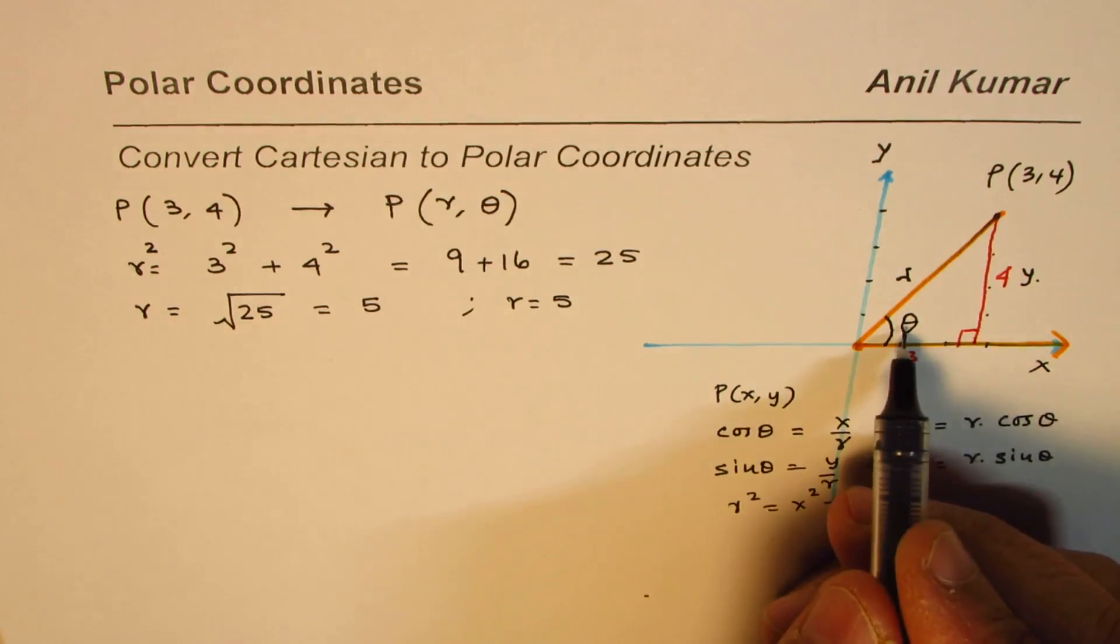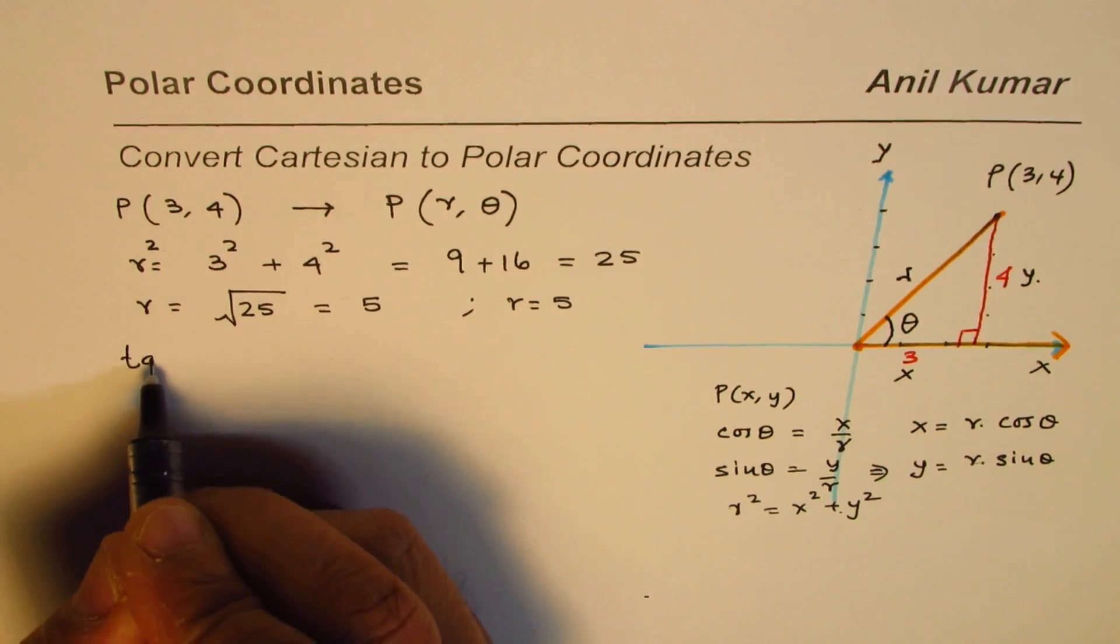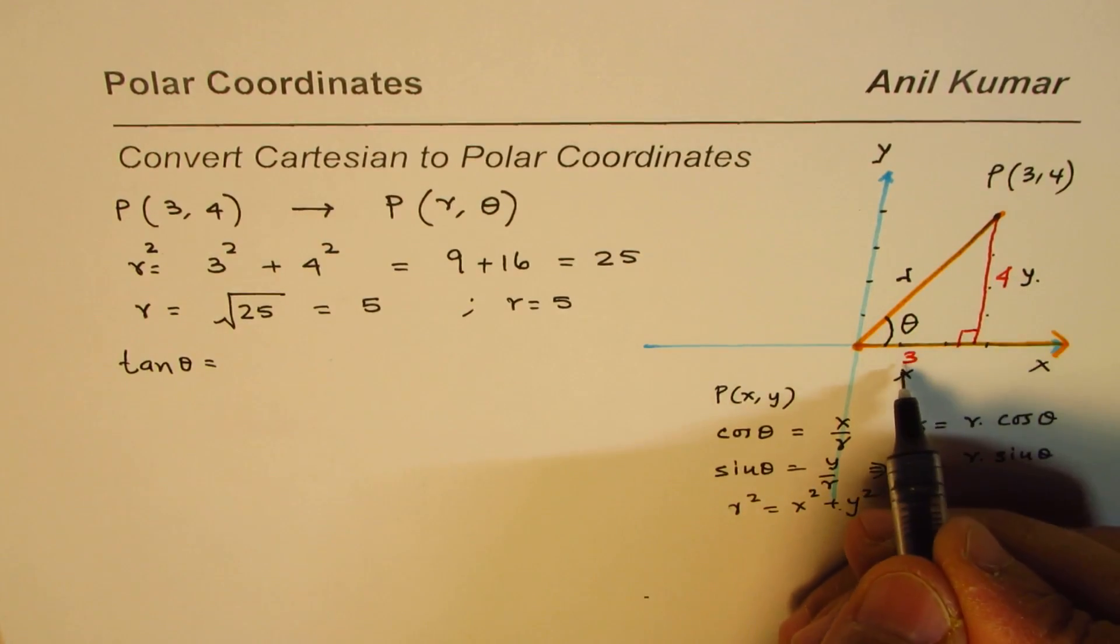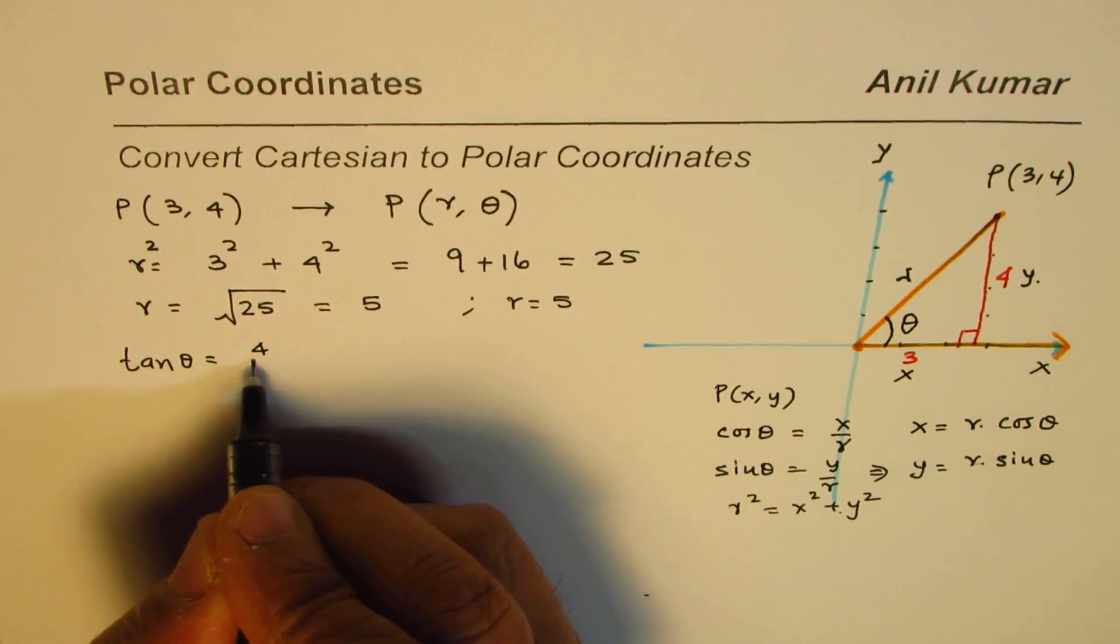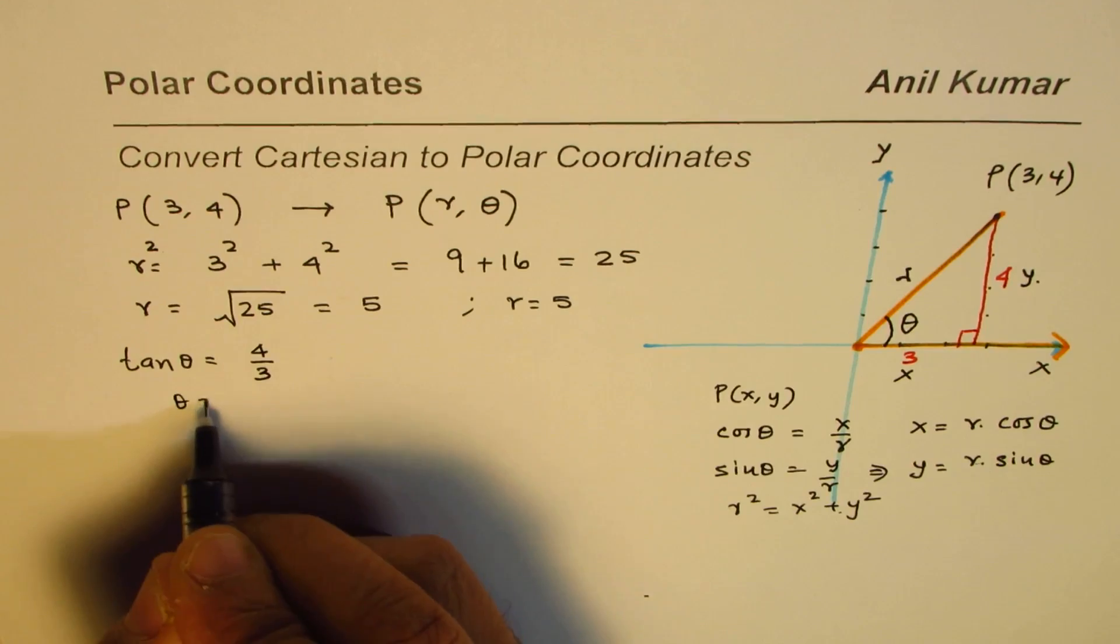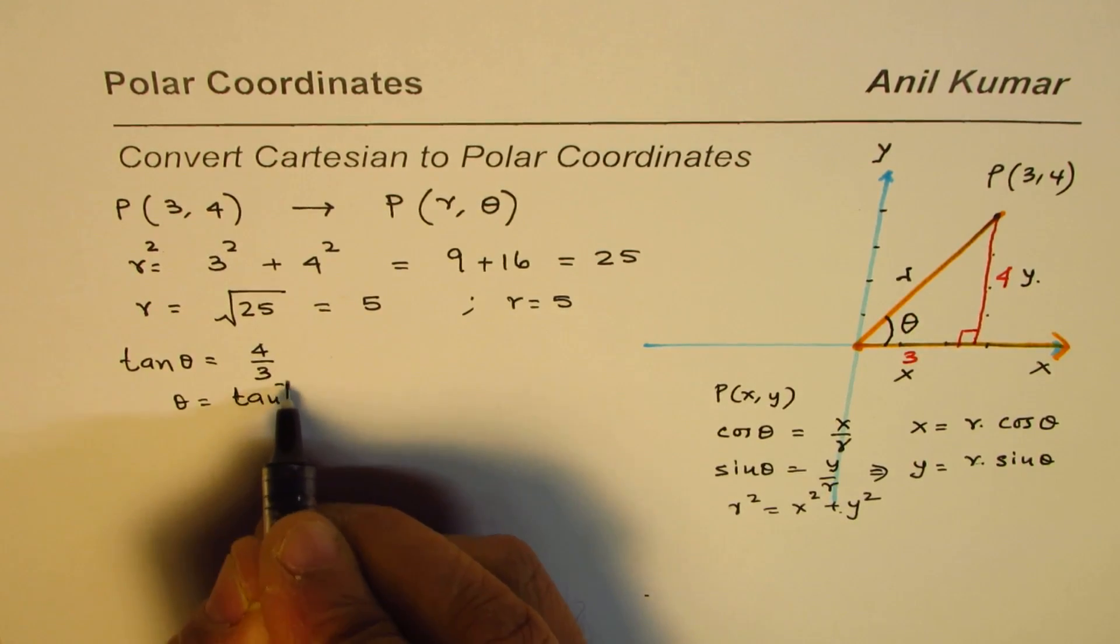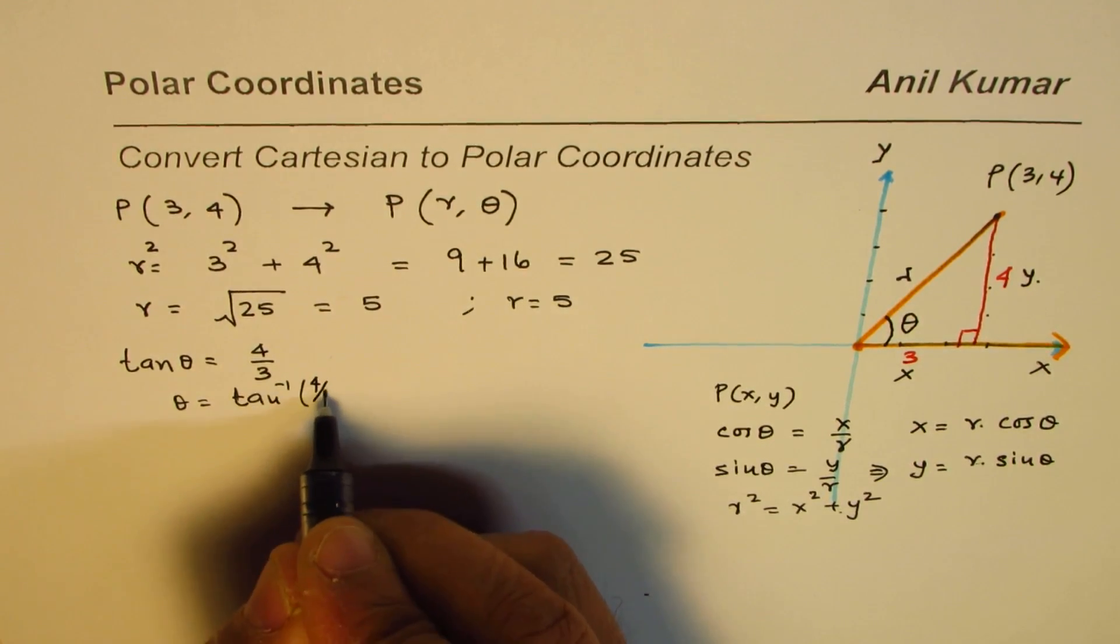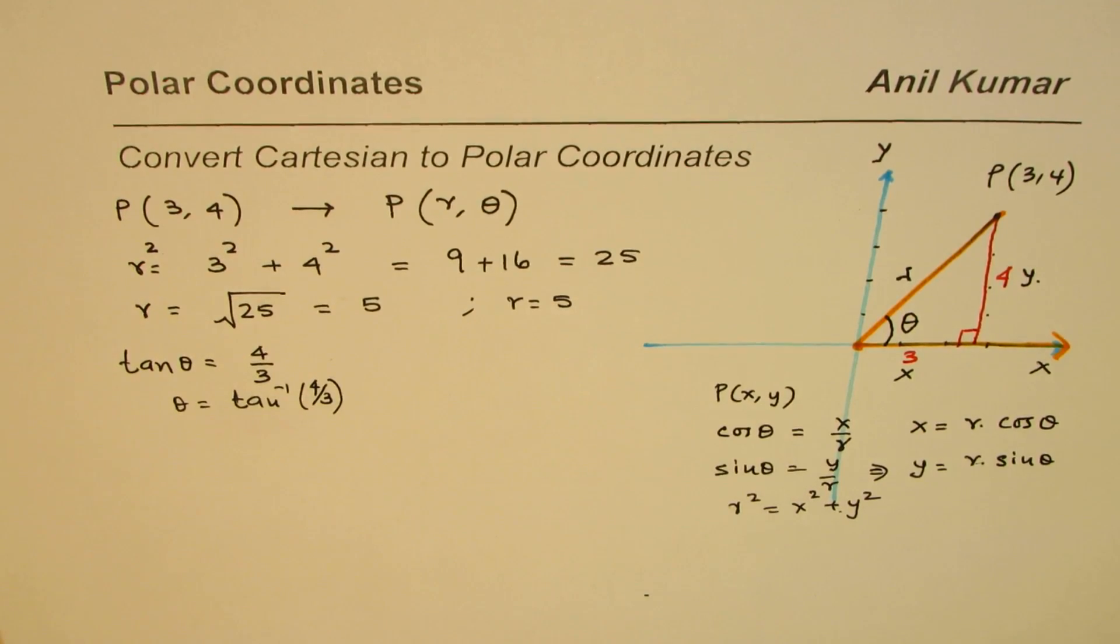Now how do you find theta? You can use tan theta. So tan theta equals to y over x or 4 over 3. So theta equals to tan inverse of 4 over 3. So that is the value of theta.